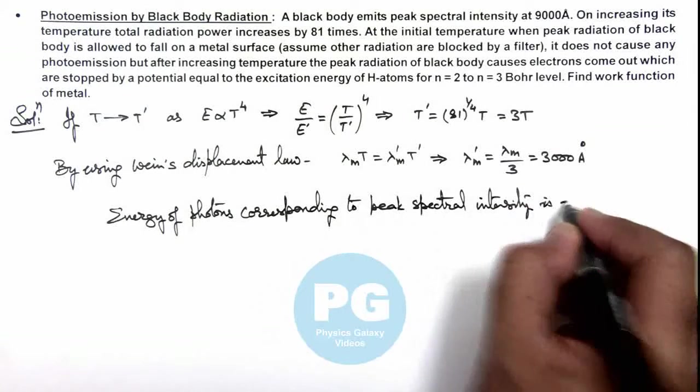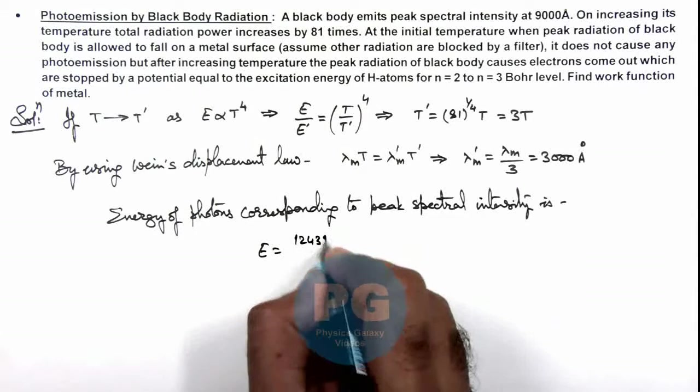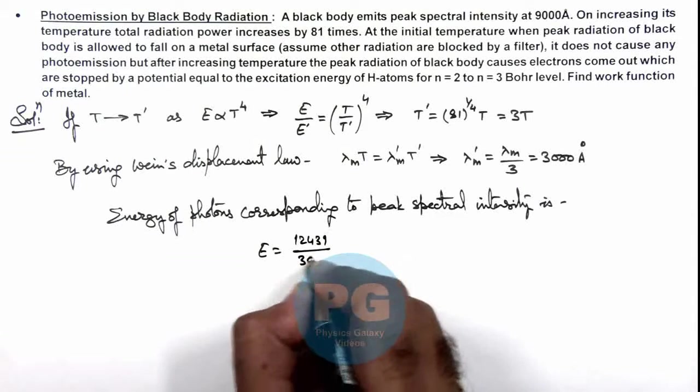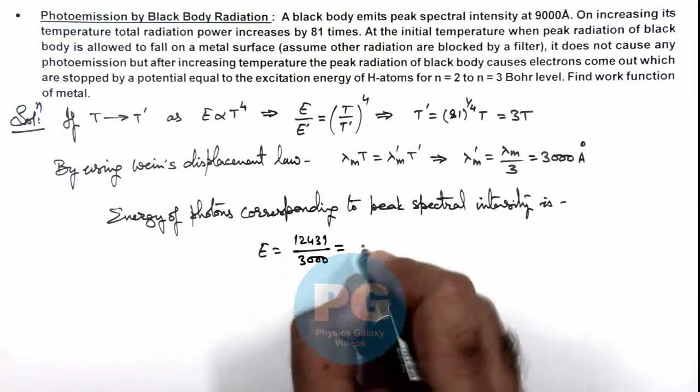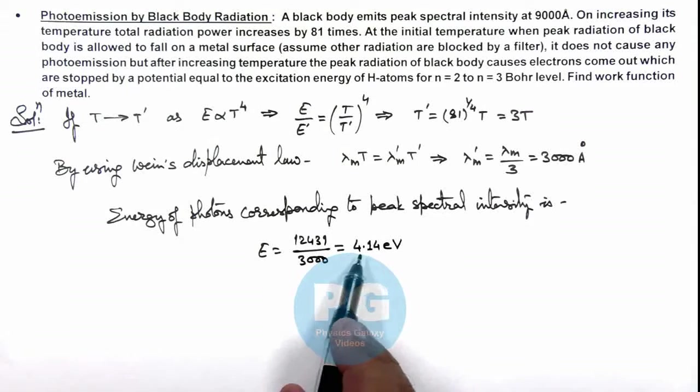This can be calculated as 12431 divided by 3000, which is equal to 4.14 electron volts. So this is the radiation energy of photons.